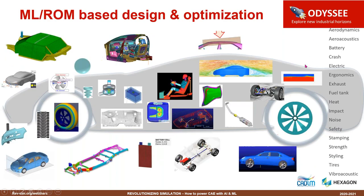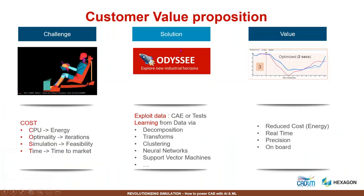We use various model reduction techniques combined with machine learning. The idea with model reduction is to reduce the set of information we want to learn, because learning from a finite element mesh of 10 million elements is quite heavy. Techniques include decomposition, Fourier transforms, clustering techniques, neural networks, and support vector machines. The initial point of learning is a few runs — a typical DOE — from which we recover the responses, and then predict any point within that domain. Our learned model will essentially replace the heavy, costly part of the design process: making the mesh, solving the model. We use parameters and responses for learning with our software, called Odyssey.